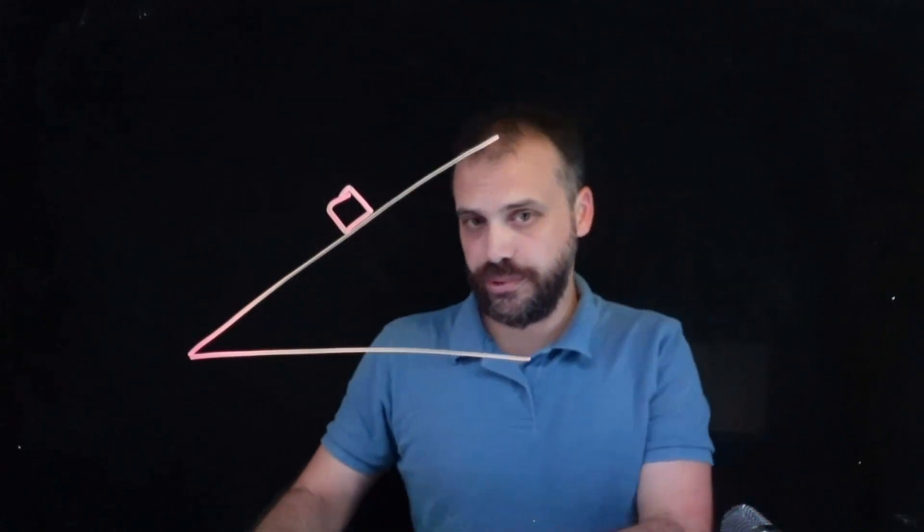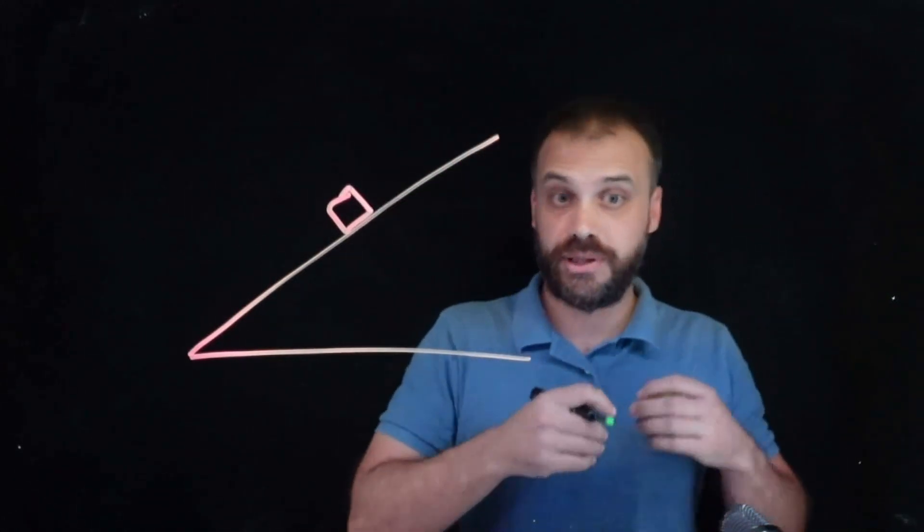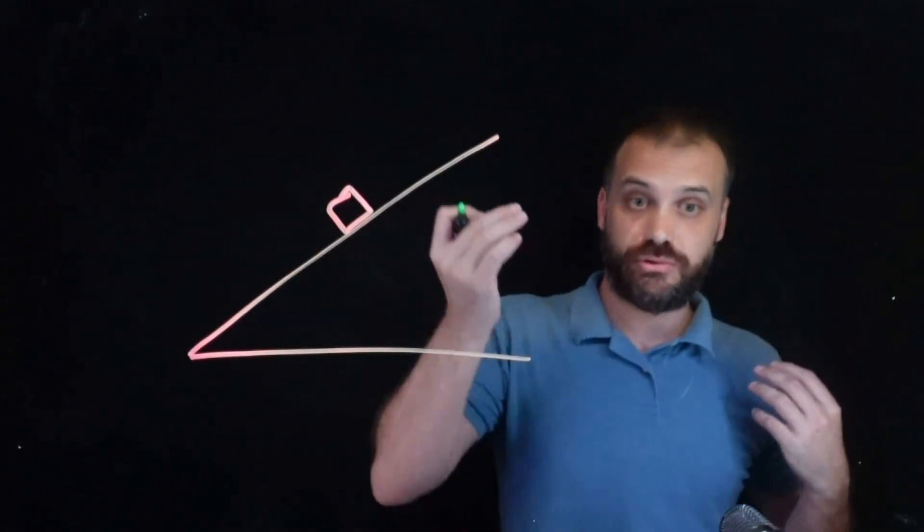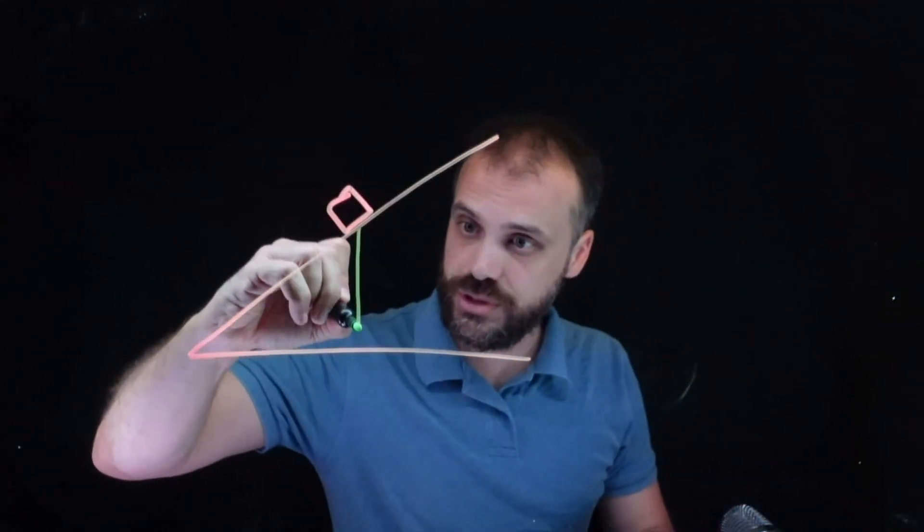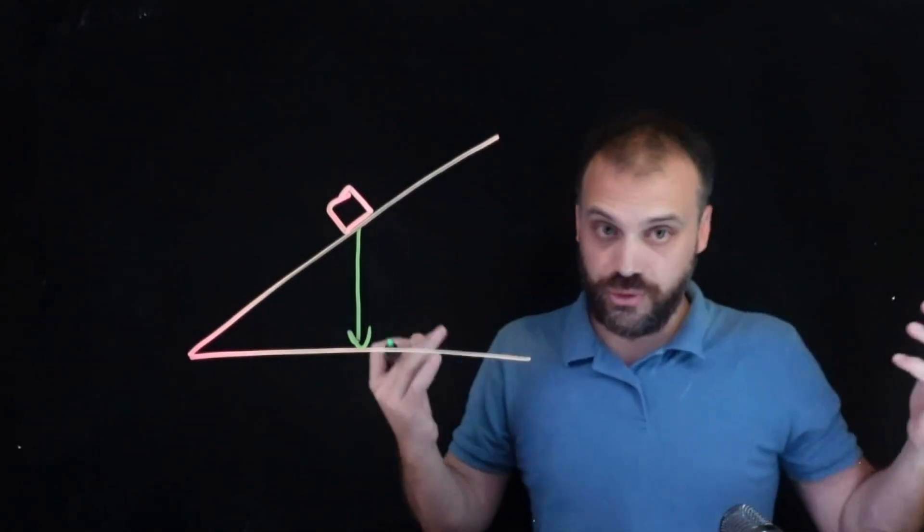Now we have an inclined plane. We have this object sitting on this inclined plane. Because mass, because gravity, we have a force acting directly down. And you know that for every force, there's an equal and opposite force.